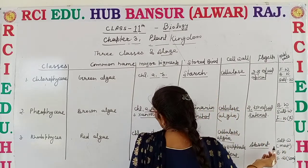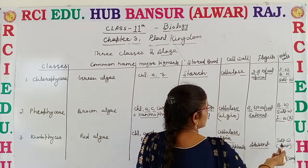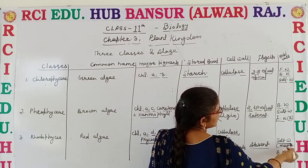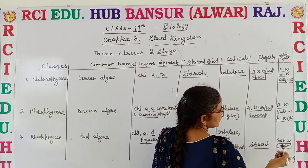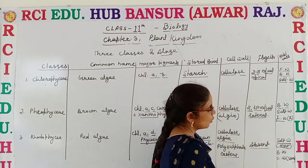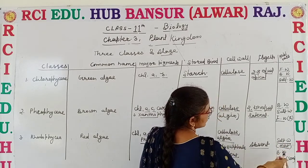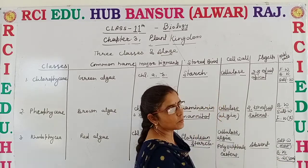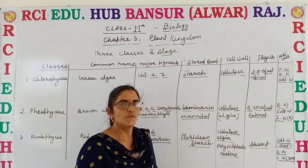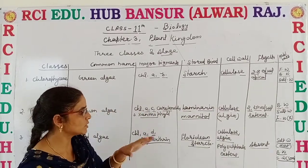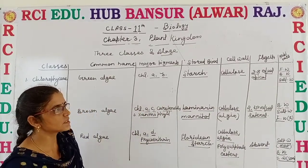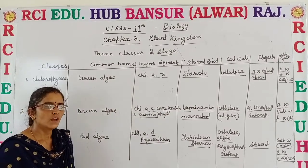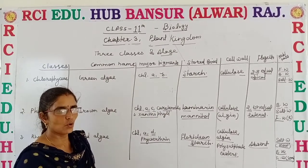In Rhodophyceae or red algae, they are mainly found in salty water, some in brackish water, and a very small number are present in fresh water. This completes the comparative study of the three classes of algae.